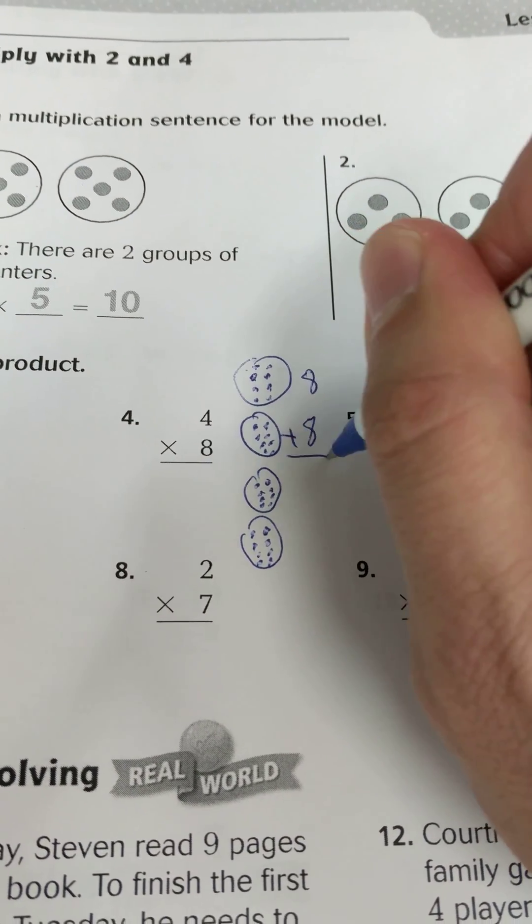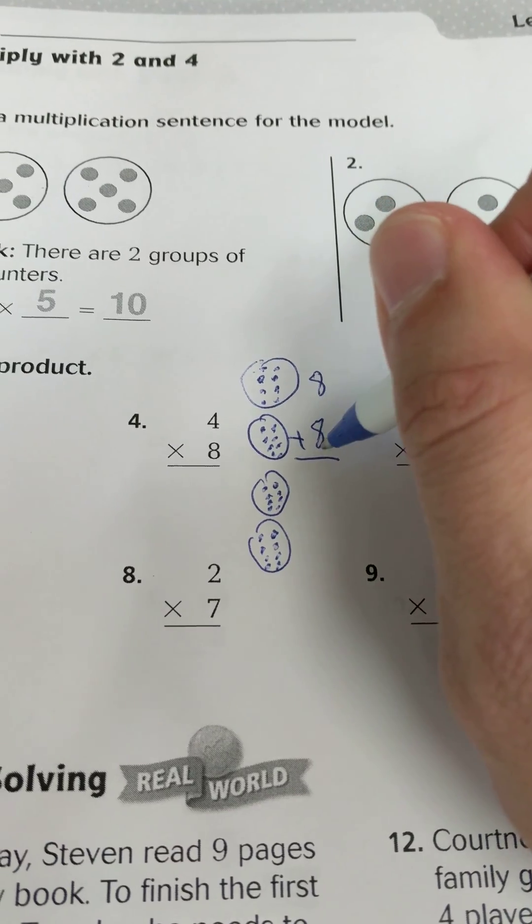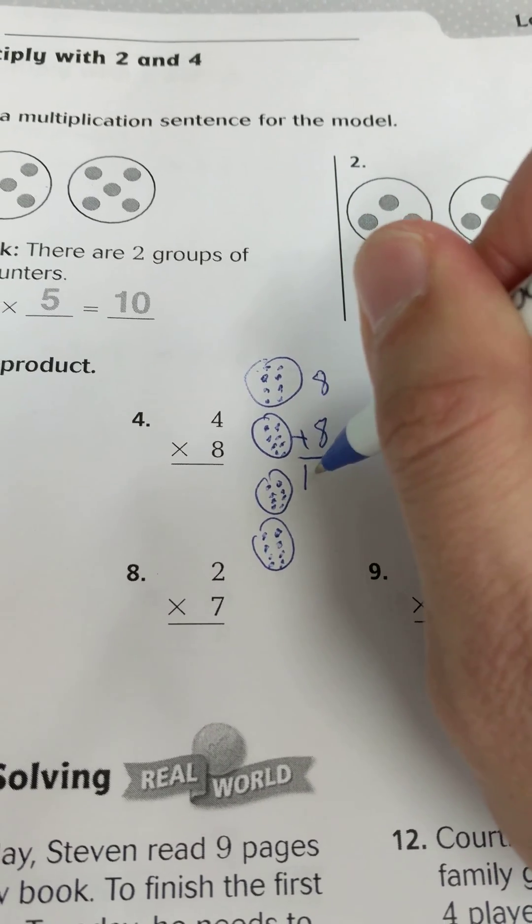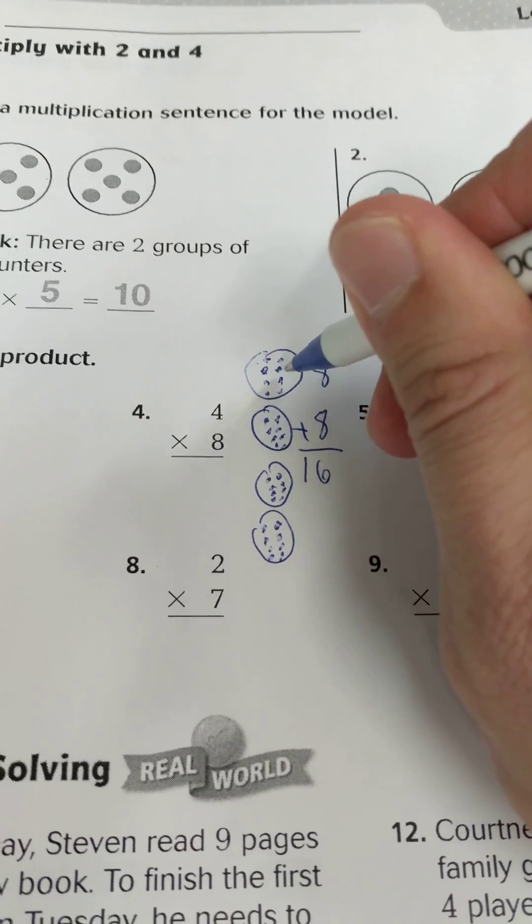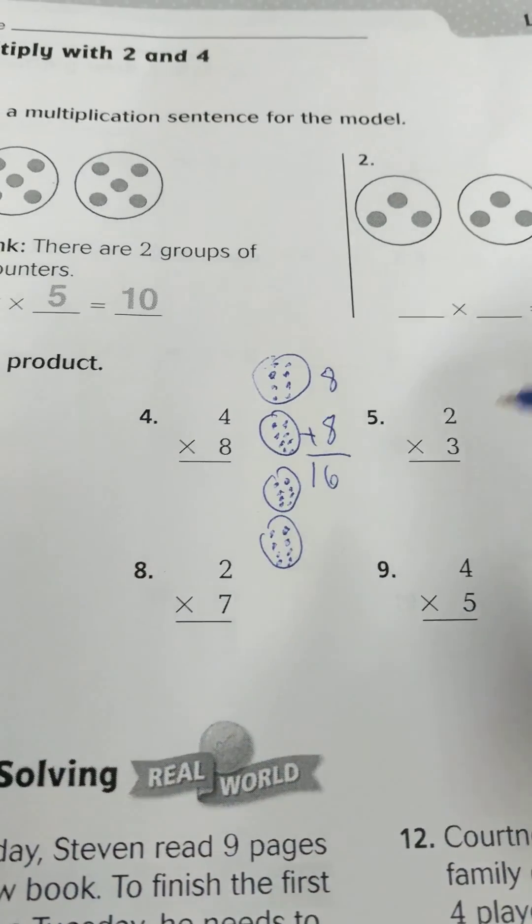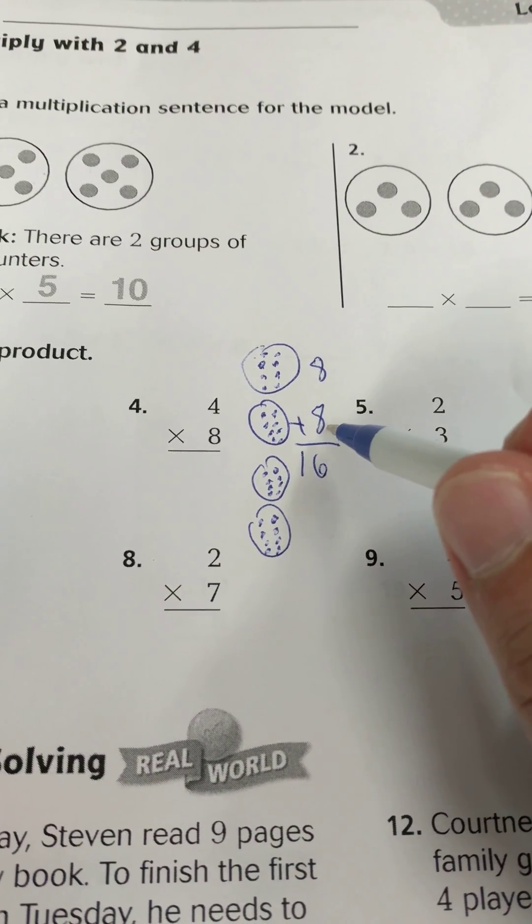You can also just write the numbers out over here. So I have 8 plus 8, and that equals what? 8 plus 8 is 16. Again, I could count all the counters in there, or if I have my addition skills, I can just add.